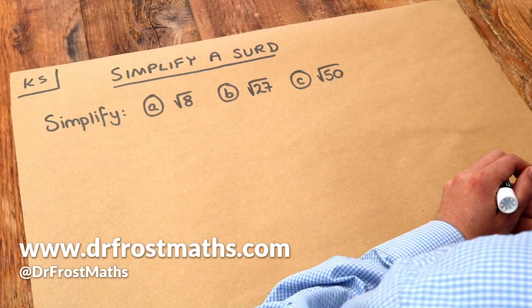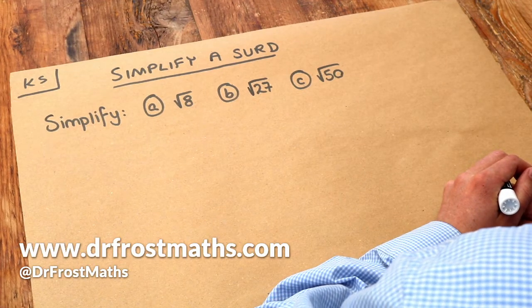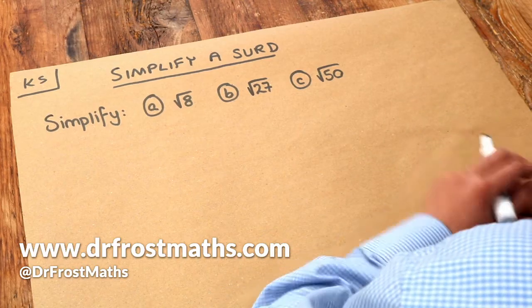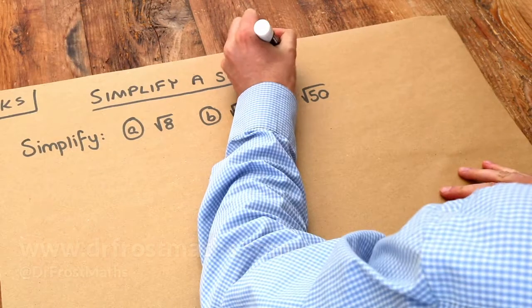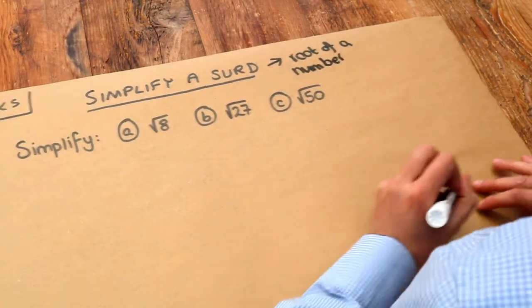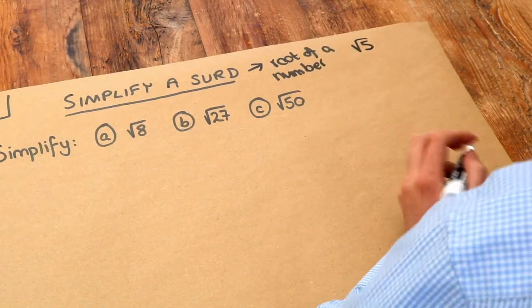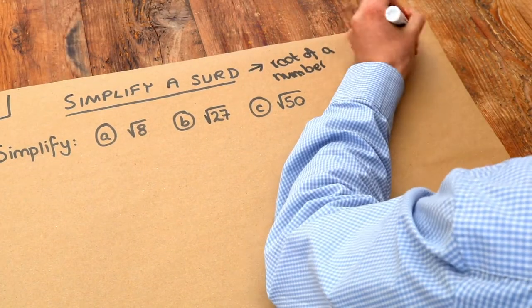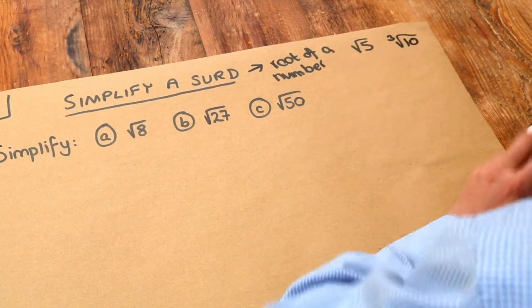Hello and welcome to Dr. Ross Mass's key skill video on simplifying a surd. If you haven't heard the term surd before, it just means the root of a number. For example, root 5 would be a surd - it's a square root of a number. You could have the cube root of 10, that's still a surd.